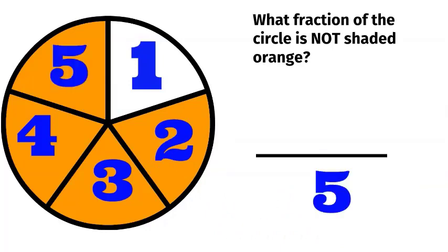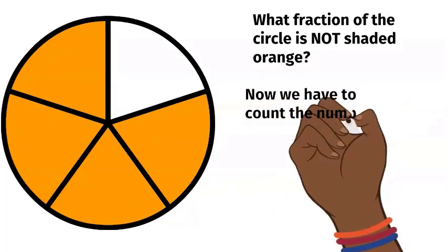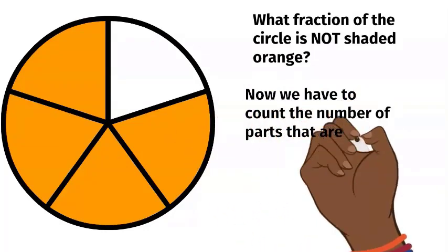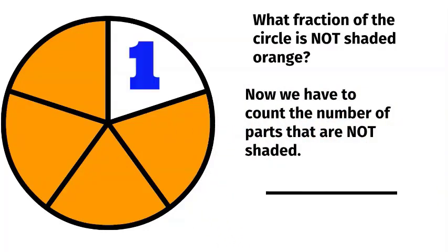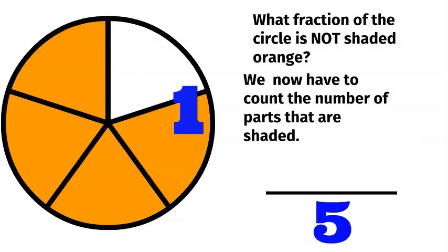So, five will be the bottom number. Now, we have to count the number of parts that are not shaded. There's only one part that's not shaded, so that one becomes our top number. So, this is one-fifth.